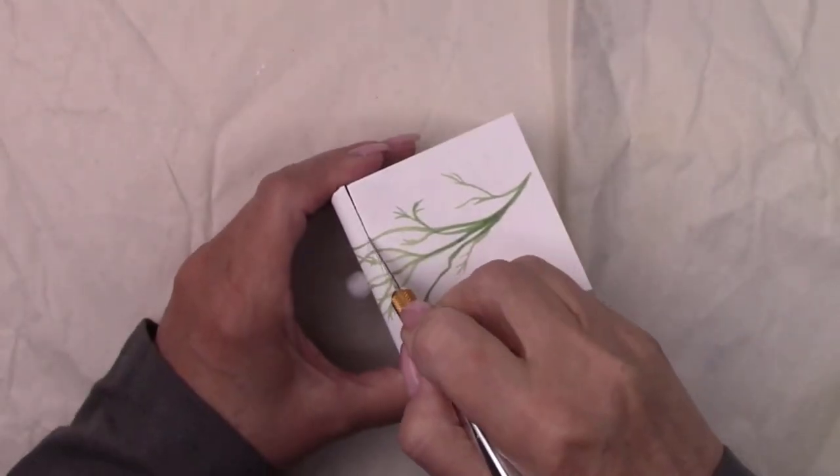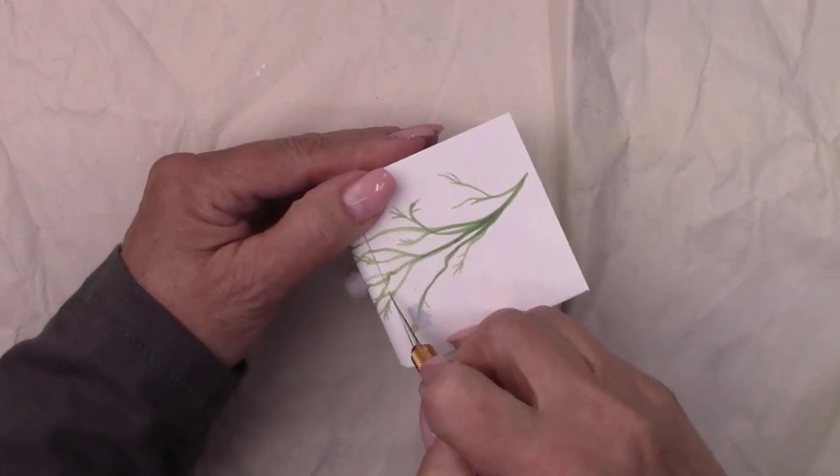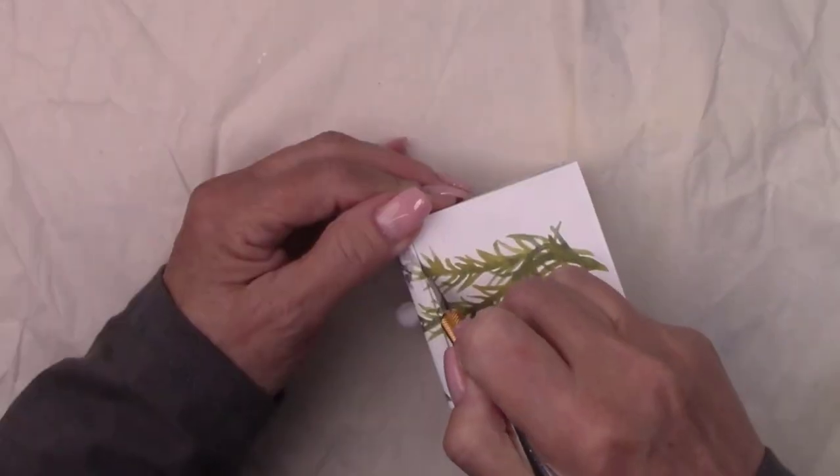Now that the paper is dry, I can safely cut it with my X-Acto blade right in the crack between the box and the lid.